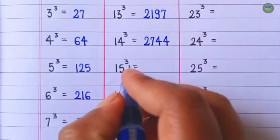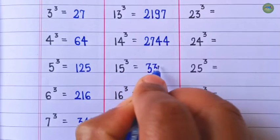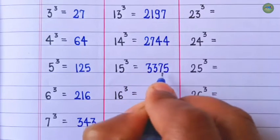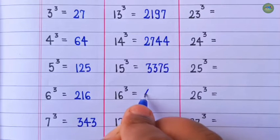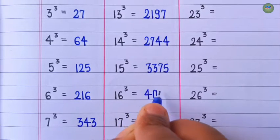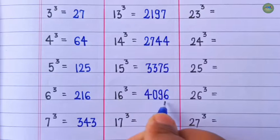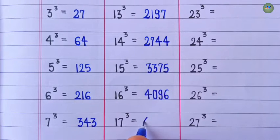Cube of 15 is 3,375. Cube of 16 is 4,096. Cube of 17 is 4,913.